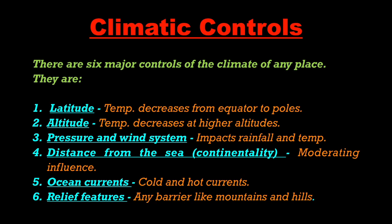Third is Pressure and Wind System, which impacts rainfall and temperature. You may come across news like a low pressure area is created in the Bay of Bengal, and as it intensifies, rainfall will increase. Fourth is Distance from the Sea, also termed as continentality. Seas have a moderating influence on nearby areas. Coastal places like Mumbai and Chennai don't experience sharp changes in day and night temperature, but places in mainland India like Delhi or Jaipur experience very sharp temperature changes in summer and winter.